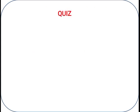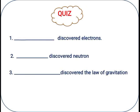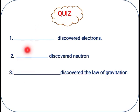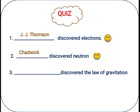Now it's quiz time. After every session I will ask a few questions based on your previous knowledge or from this video. There are three questions: Who discovered electrons? Who discovered the neutron? Who discovered the law of gravitation? The answers are: J.J. Thomson discovered electrons, Chadwick discovered the neutron, and Sir Isaac Newton discovered the law of gravitation.